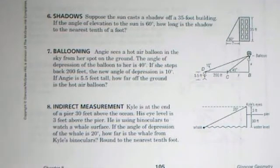Let's look at number seven, this hot air balloon problem. Angie sees a hot air balloon. She's on the ground. If she steps back 200 feet, she finds another angle. Her angle of depression, the angle of depression of the balloon to her is 40. Remember that's the same as angle of elevation from her to the balloon. And back 200 feet, there's a new angle of depression. She's five feet five tall. We're assuming that's her eye level. Then how far off the ground is a hot air balloon?